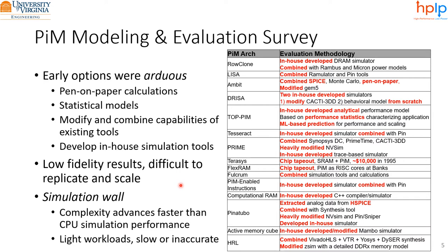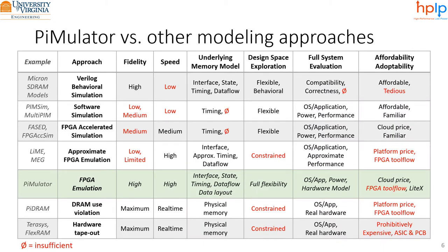Recent CPU simulation tools somewhat solved this problem. However, CPU simulation is limited by the simulation wall, which states that complexity advances faster than CPU simulation performance. Therefore, only light workloads can run accurately on simulated complex PIM architectures. To support the increase in heterogeneity, complexity, and parallelism that PIM architectures bring, we believe a PIM framework must excel at several selected attributes.